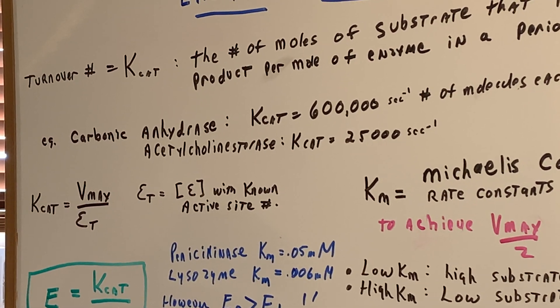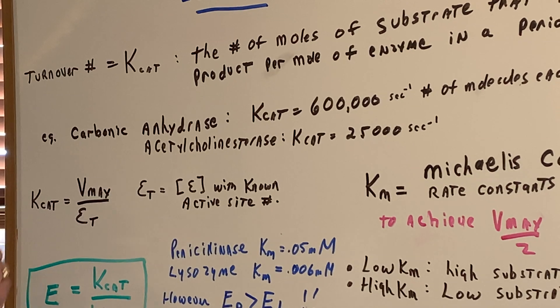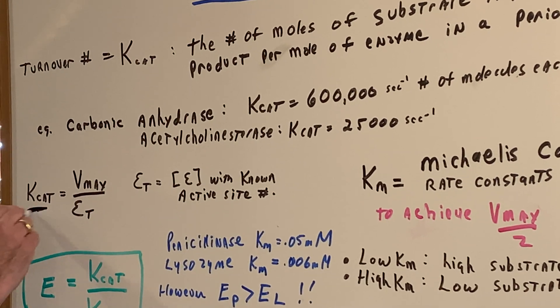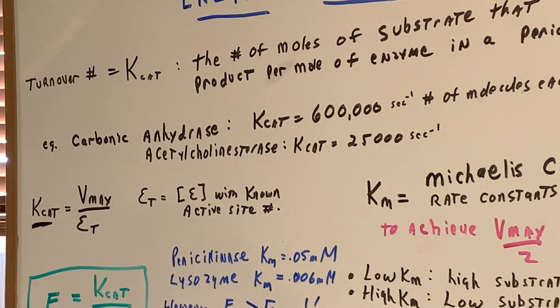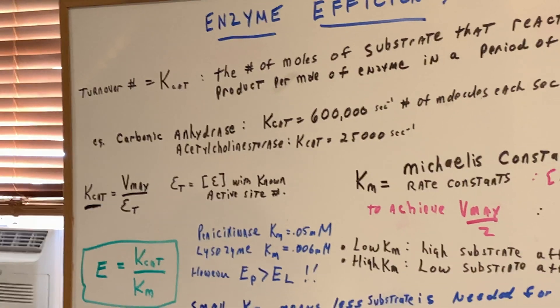So we should have an understanding: if you see Kcat, you know it's the turnover number.